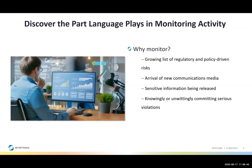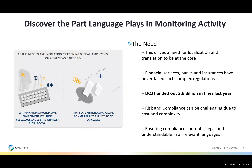An increase in violations of regulatory policies has resulted in more stringent scrutiny, larger fines, and widening regulation, as well as a huge effort required to comply in highly regulated industries. This drives a need for localization and translation to be at the core of each global business. Financial services, banks, and insurers have never faced such complex regulations such as RCPA, Basel, Solvency, and the Patriot Act, amongst others.